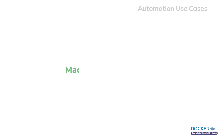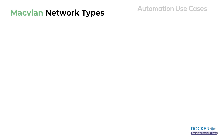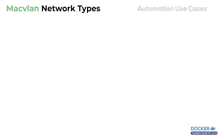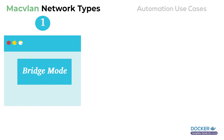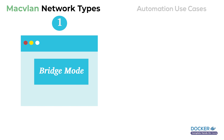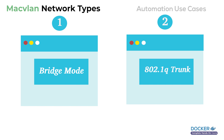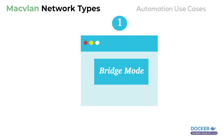Now we understand what MacVLAN is. Let's go over and see what modes MacVLAN operates in. Essentially there are two modes: one is the bridge mode and the other one is dot1q.